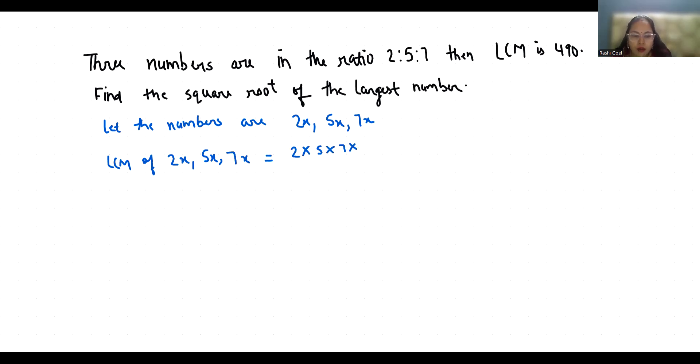And what is the LCM given as per the question condition? 490. That means both things are equal because both are LCM of 2x, 5x, and 7x. So 2 times 5 times 7 times x equals 490. So x equals 490 divided by 2 times 5 times 7.